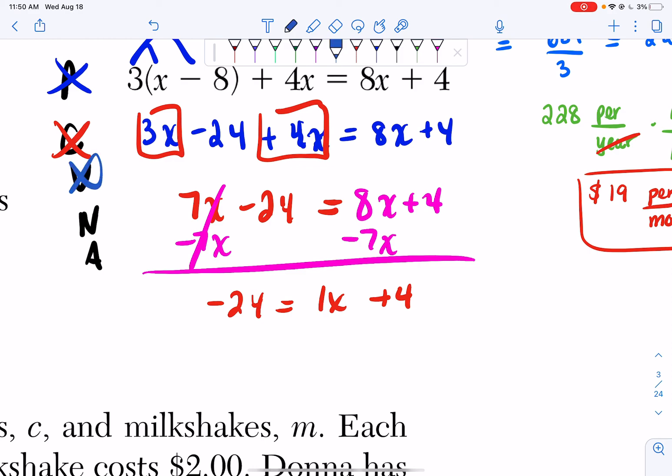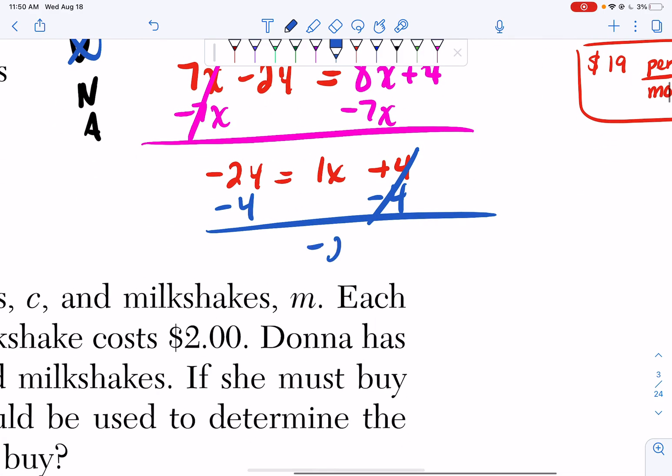Now all my variables are on one side. Now I'm going to move all my numbers to the other side. So I'm going to get this plus 4 over here by subtracting. So minus 4, minus 4. Negative 24 minus 4 is negative 28. And that's equal to 1x.